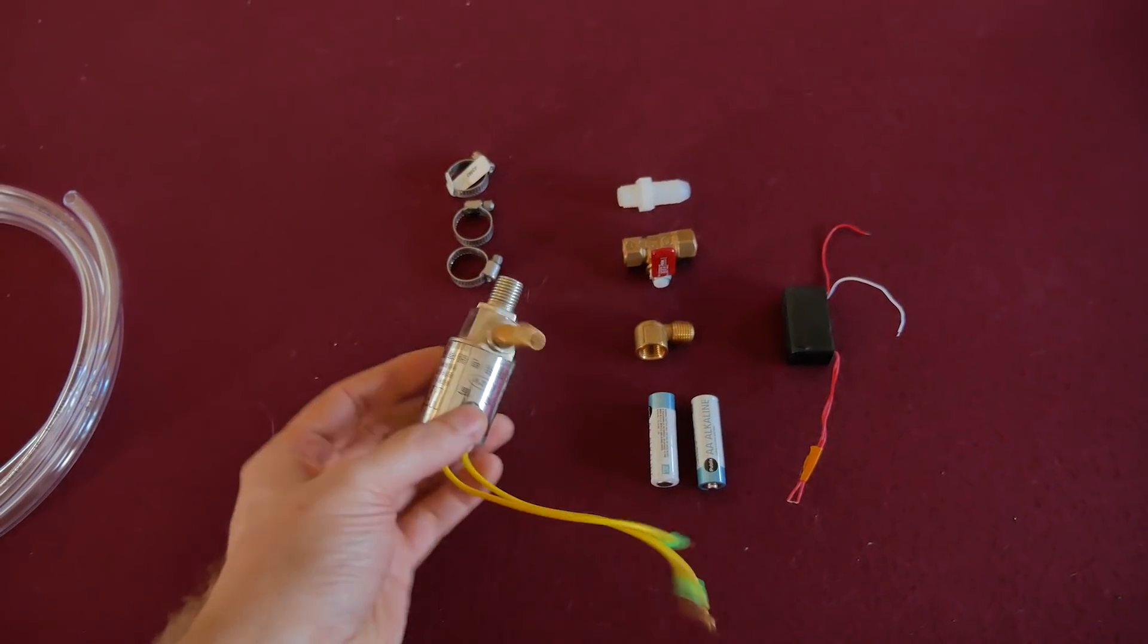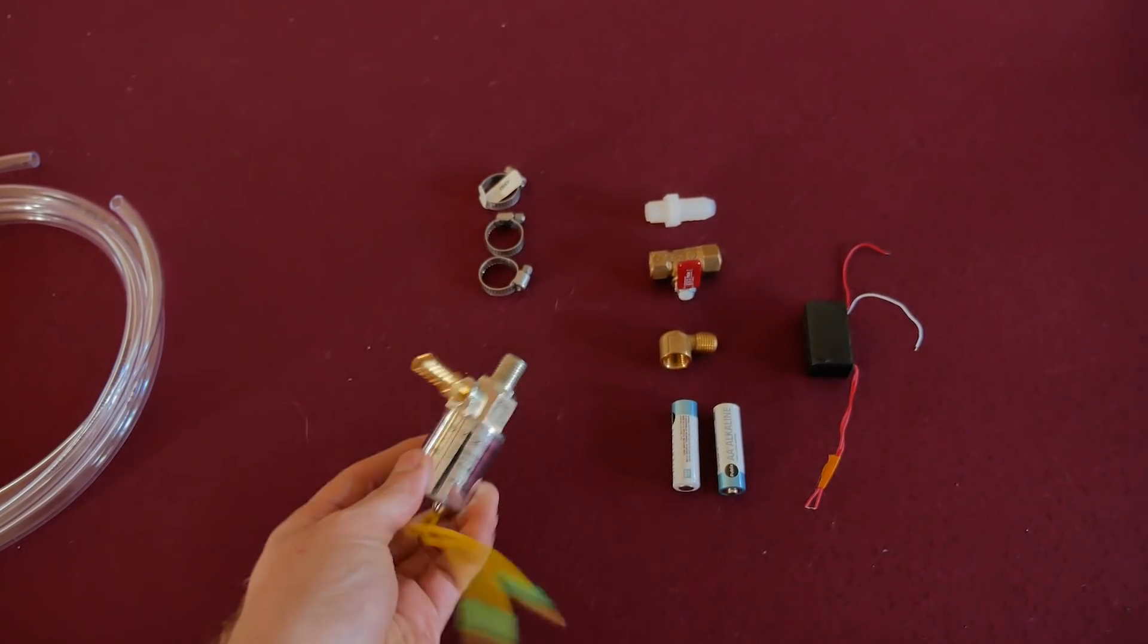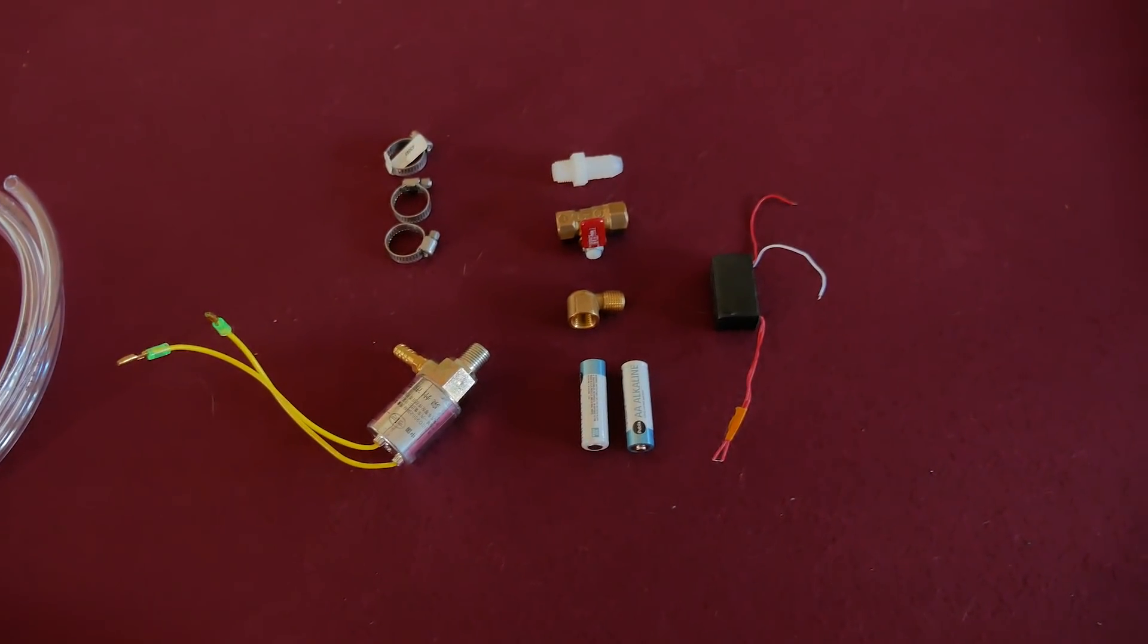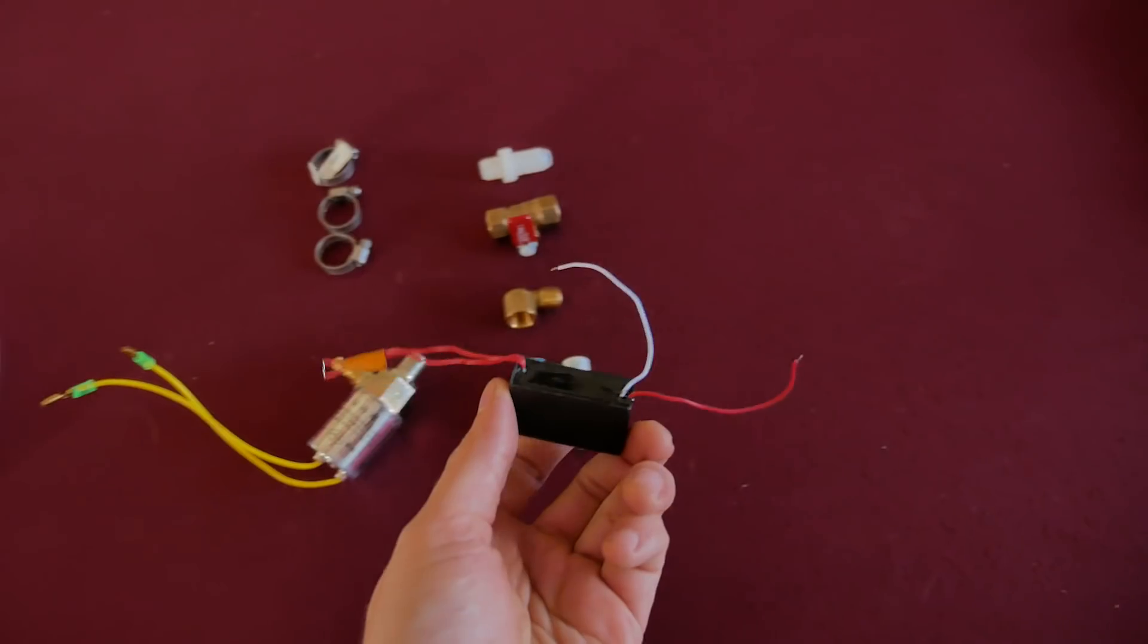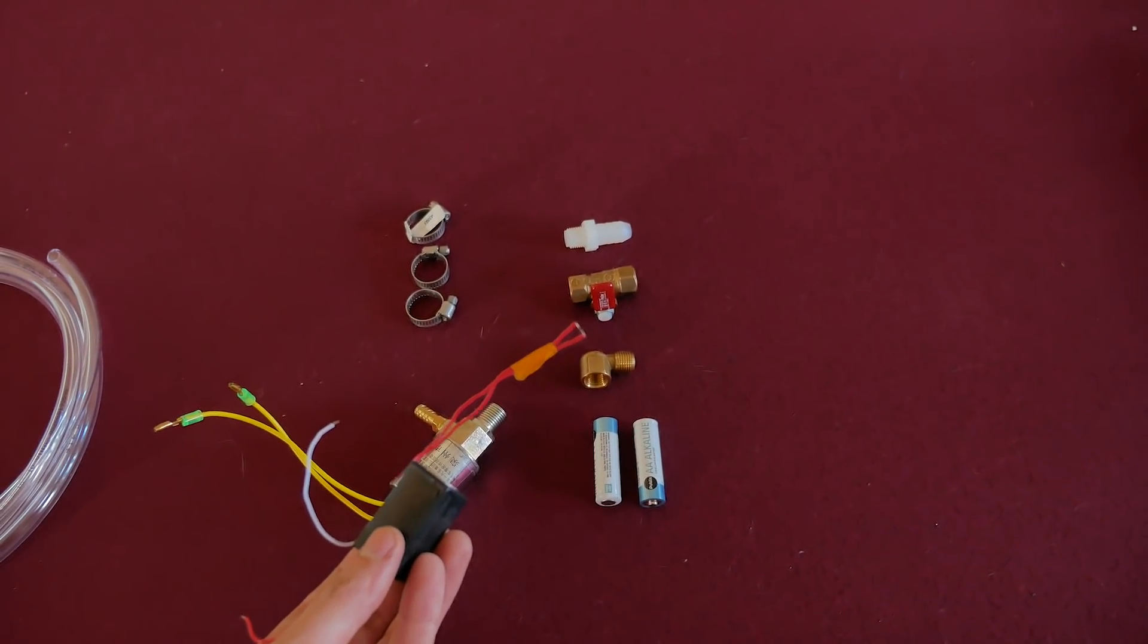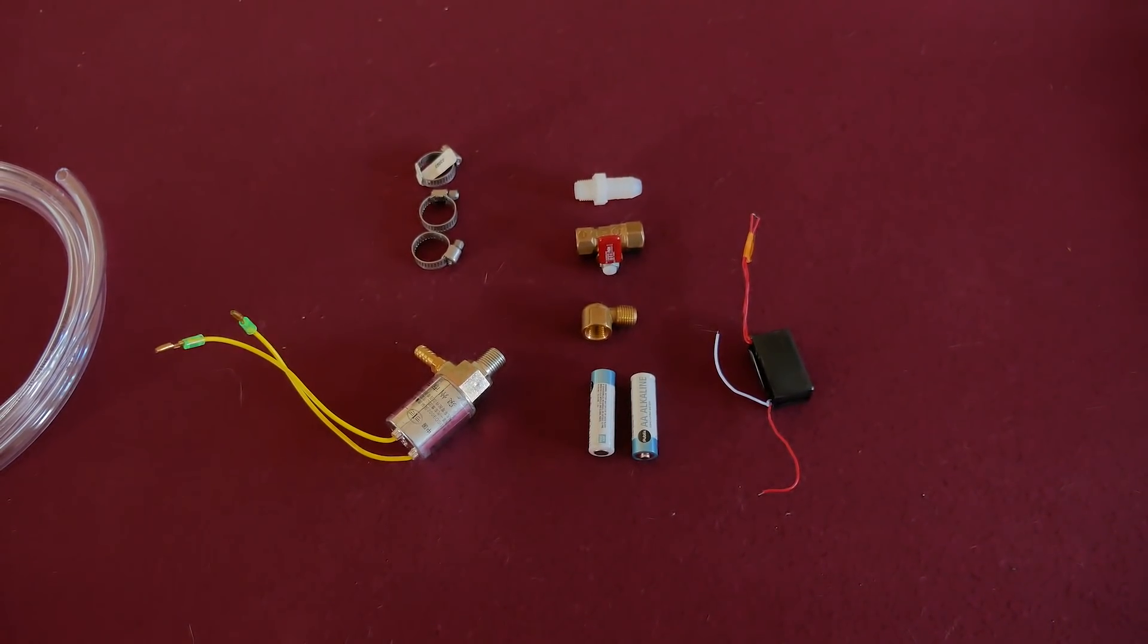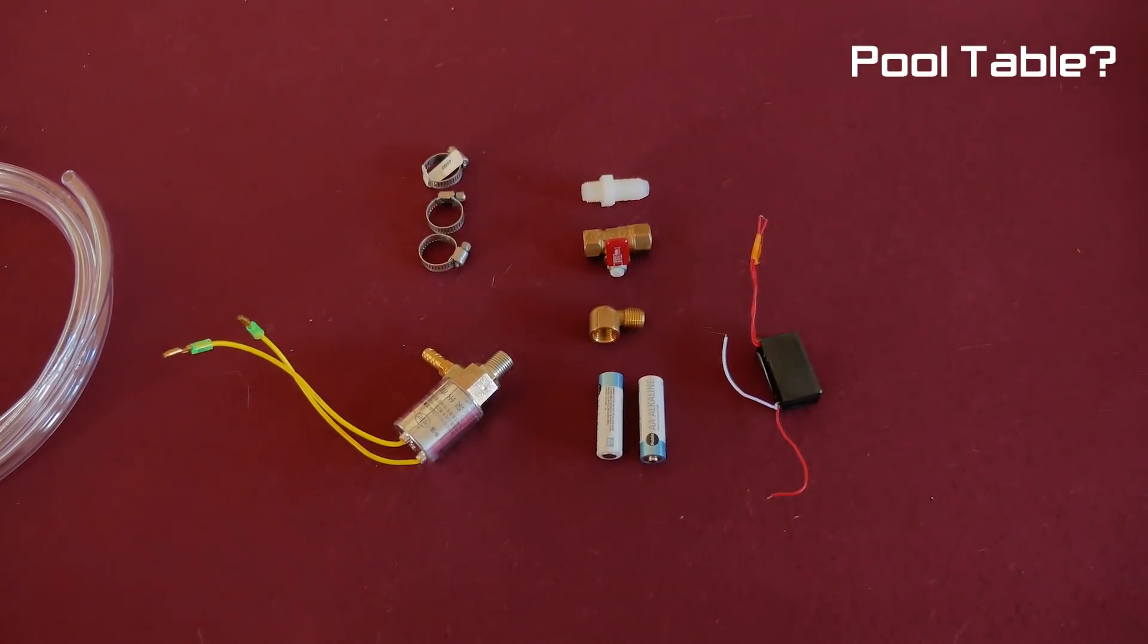We've got an air solenoid here. This is, I think, for a horn on a car. It was like eight bucks on Amazon. A little high-voltage generator—this converts three volts into 7,000 volts. That'll give us our spark and some plumbing. So let's put it together on the bench and see if it works.